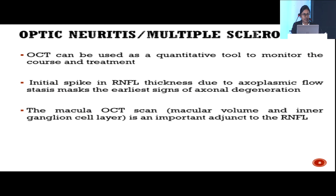First, regarding optic neuritis in multiple sclerosis: OCT can be used as a quantitative tool to monitor disease course and treatment effects by measuring retinal nerve fiber layer thickness. In MS patients with optic neuritis, there is an initial spike in RNFL thickness due to axoplasmic flow stasis — edema is seen on OCT, so RNFL thickness increases. However, this masks the earliest signs of axonal degeneration, as axons are also dying.